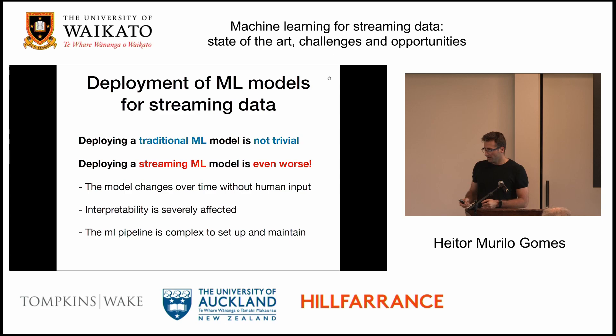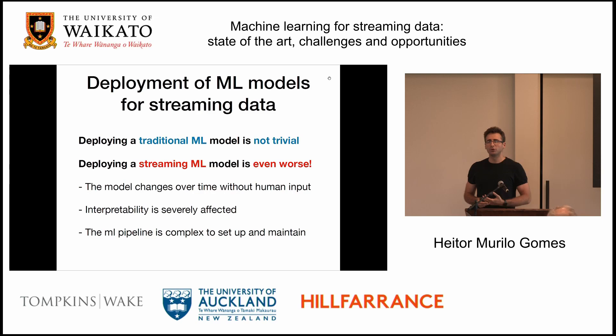For deployment, traditionally deploying machine learning models is not trivial, even nowadays, even for batch data. For streaming data it's even worse, because of changes over time there is no human input, and some companies really like to have control over the model, because the model might be accurate but then acting in a weird way. So sometimes people don't go for streaming deployment because of that.